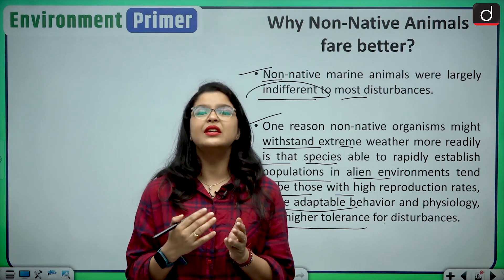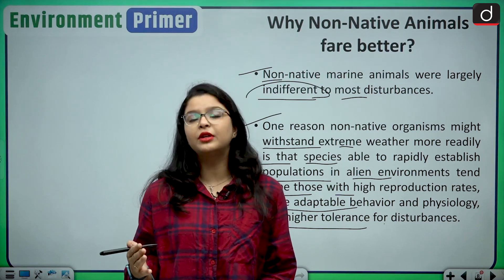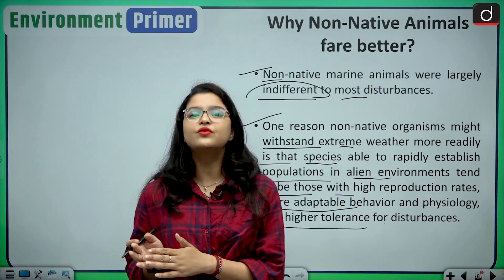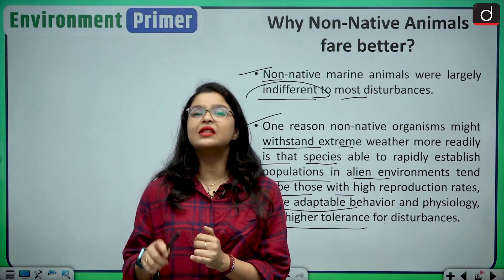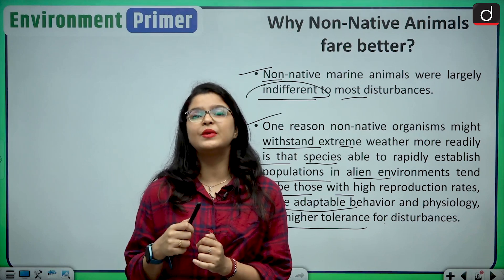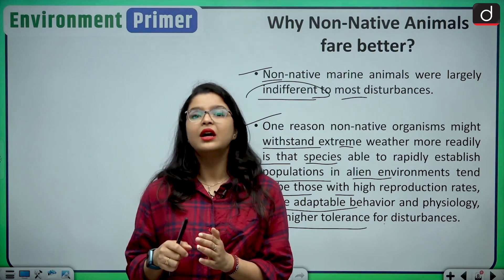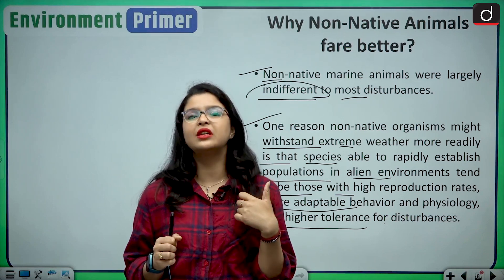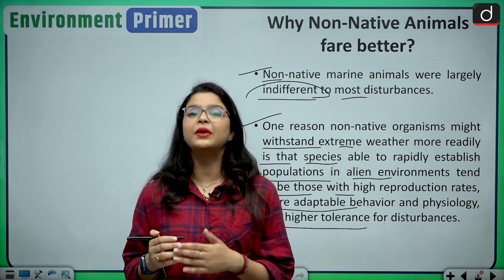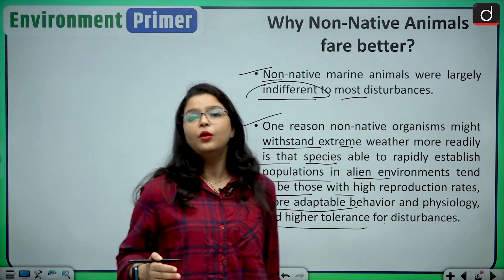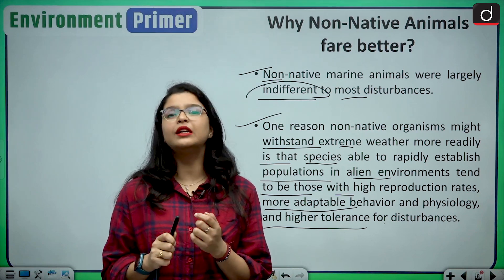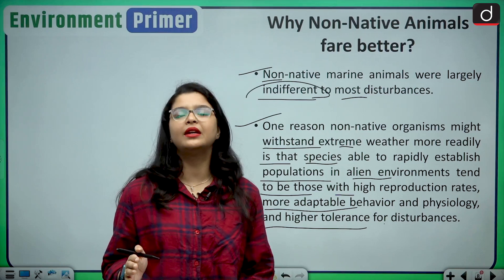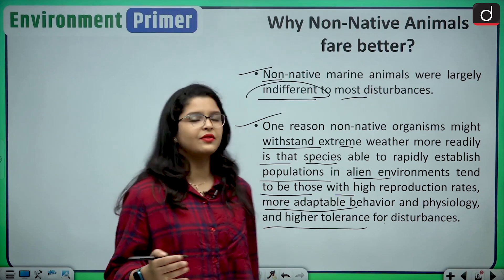Native species, on the other hand, will take time to adapt to new climatic conditions. This is why non-native species are also a threat to native species — when survival is at stake, the more adaptable non-native species will survive while native species are harmed. Due to their ability to adapt to changing environments, non-native species fare better than native species.